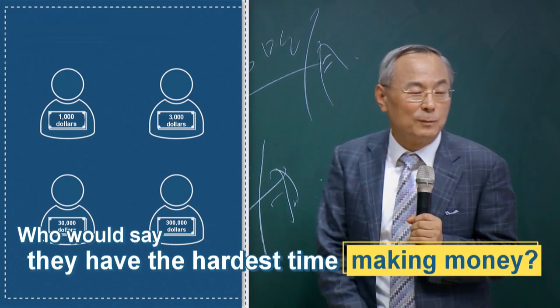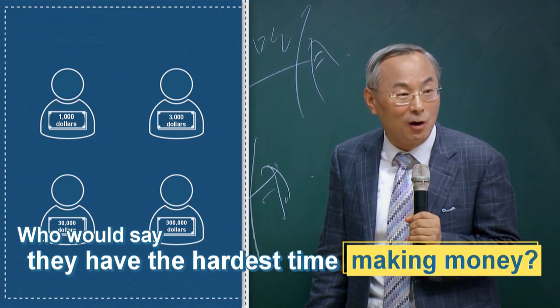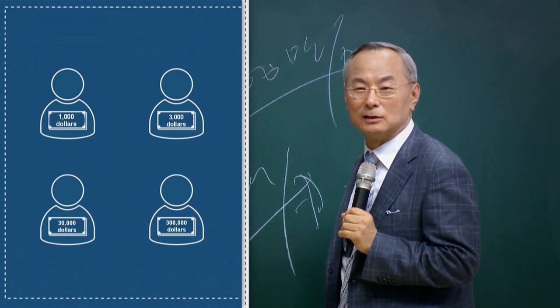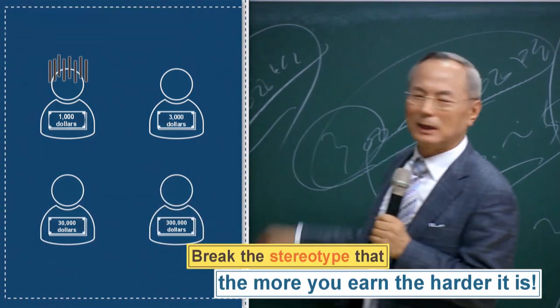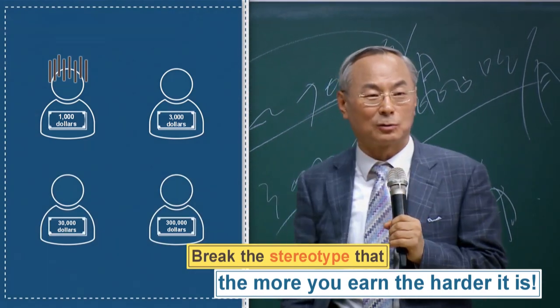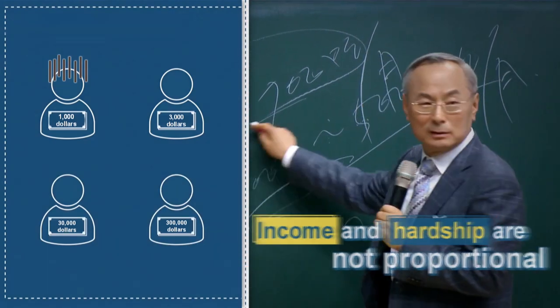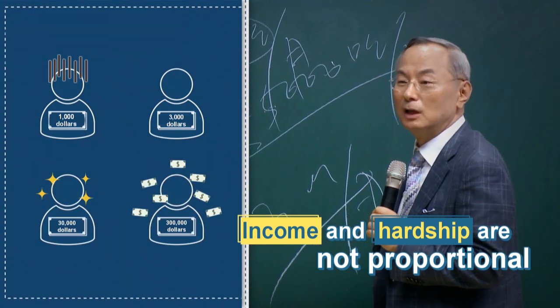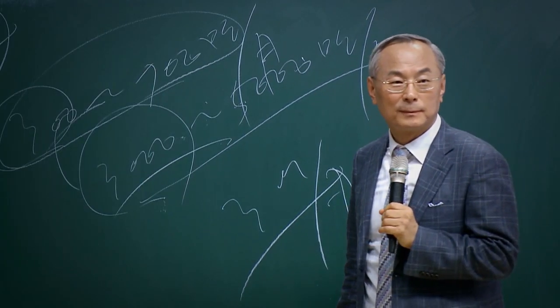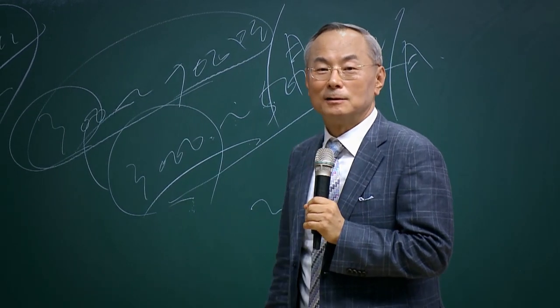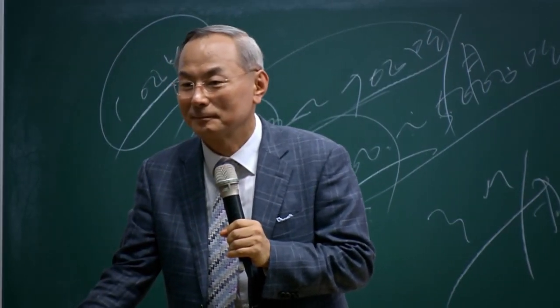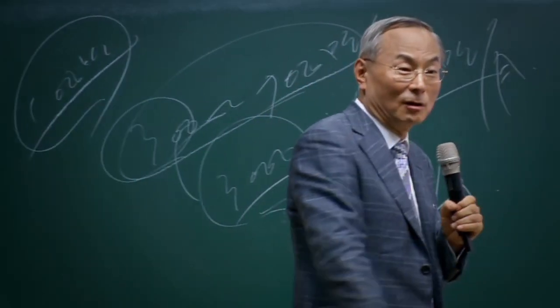Then who has the hardest time making money? It should be 100 times harder for those who earn $300,000, right? But it's the $1,000 earners that say making money is way too hard. And the $30,000 earners say that making money is easy. Someone who makes $300,000 a month says money is everywhere. So the less money you make, the harder it is.